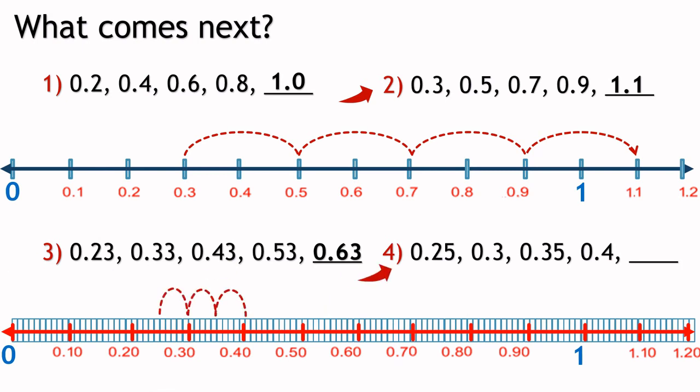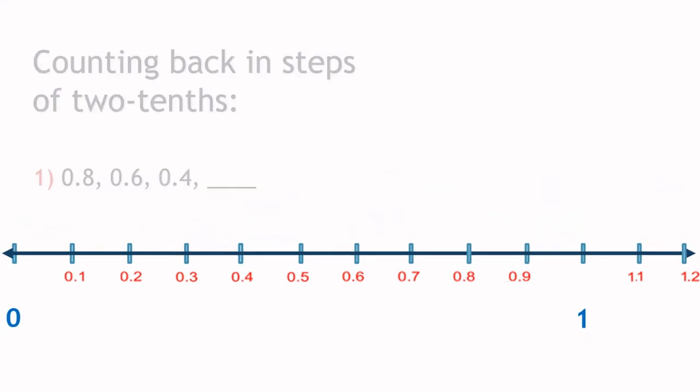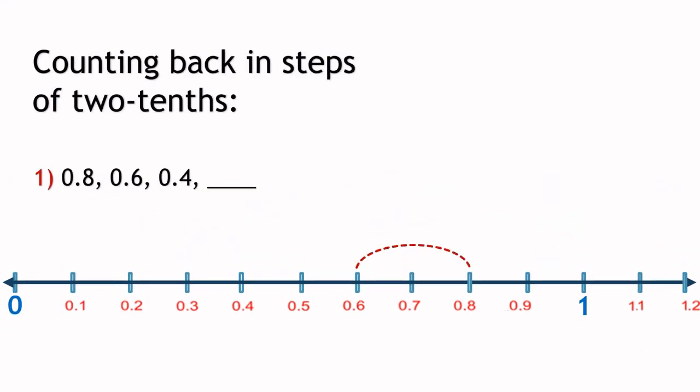And in this one count on in steps of five-hundredths and the next number will be 0.45. And in this example, we count back in steps of two-tenths to find the next number. That is 0.2.